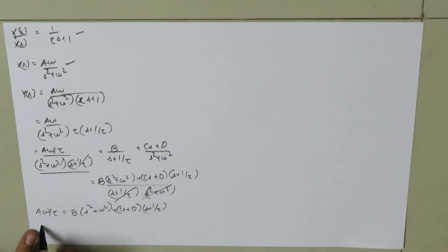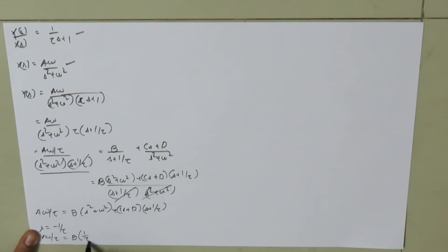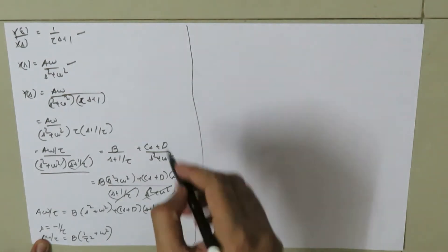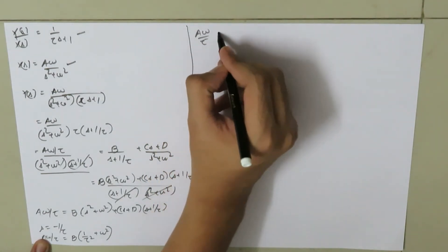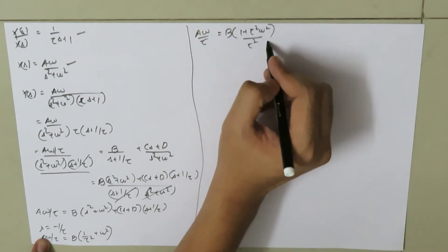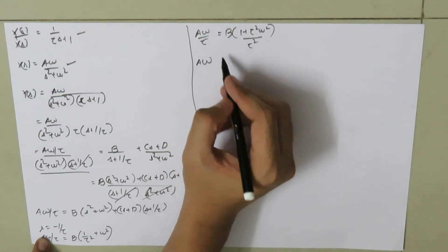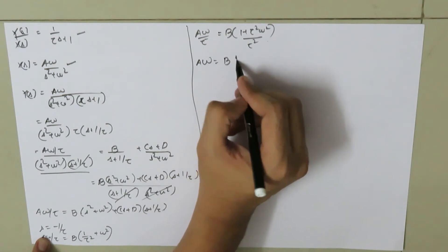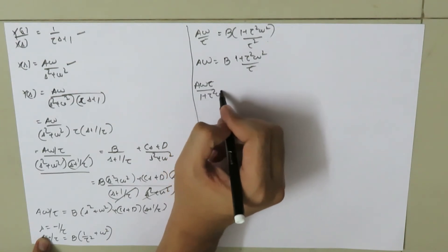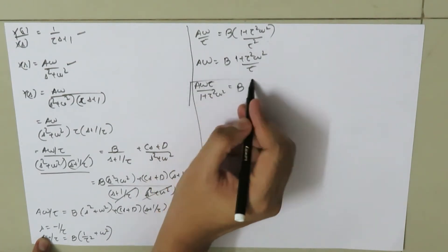To find B, we put s equal to negative 1/tau. This gives a·omega/tau equal to B times (1/tau squared plus omega squared). Simplifying: a·omega/tau equals B times (1 plus tau squared·omega squared)/tau squared, so a·omega·tau divided by (1 plus tau squared·omega squared) equals B.